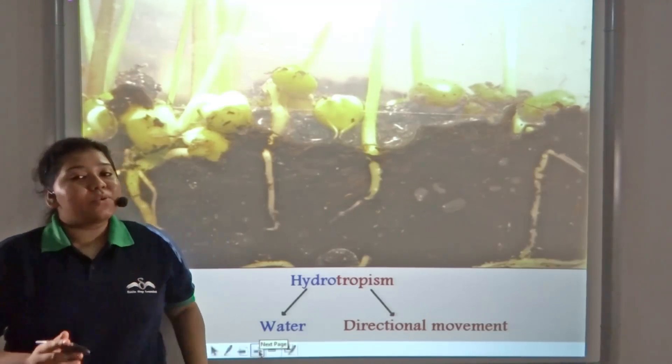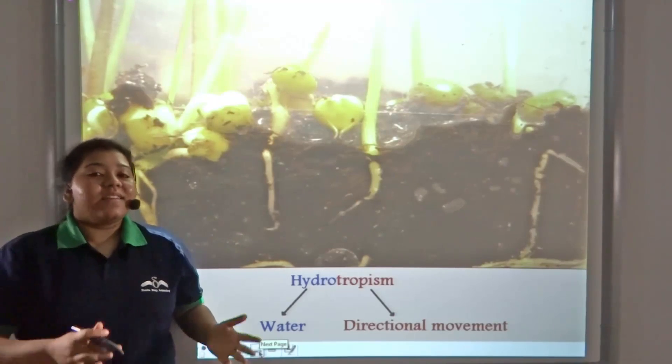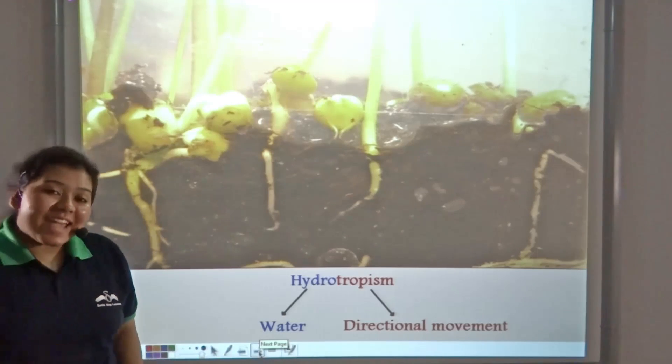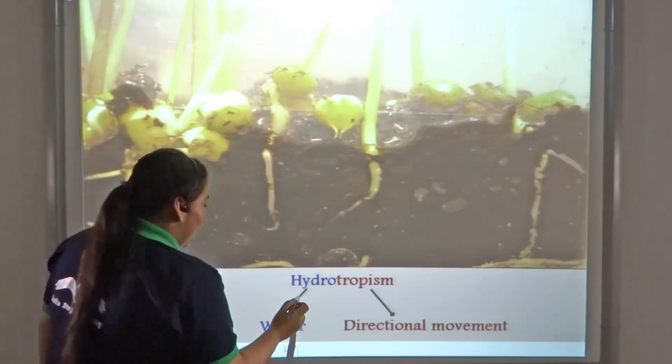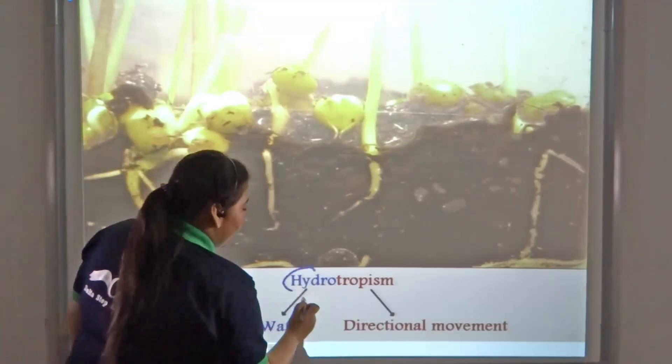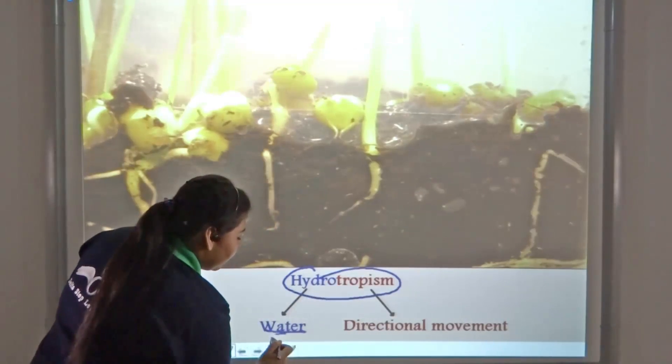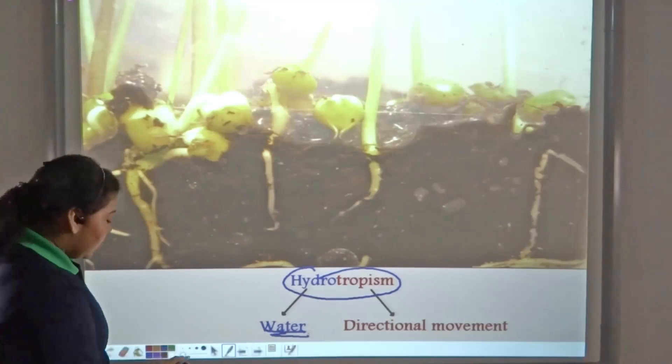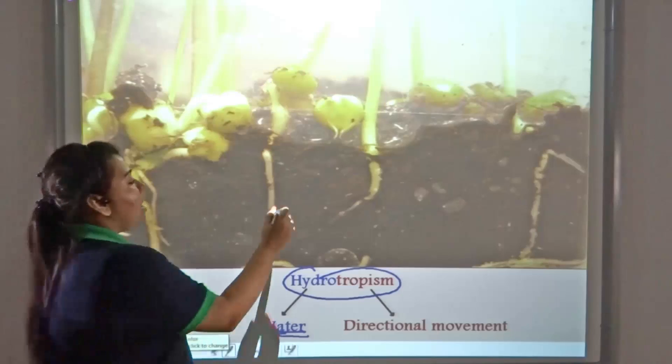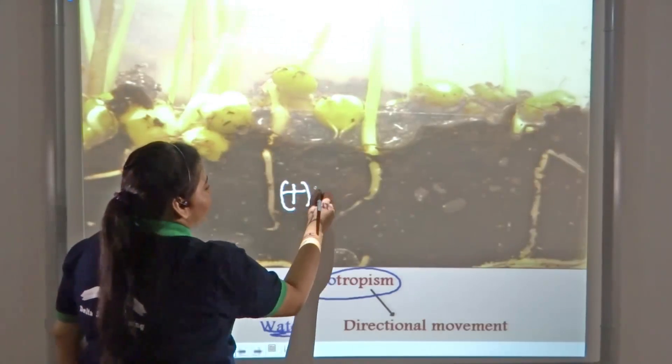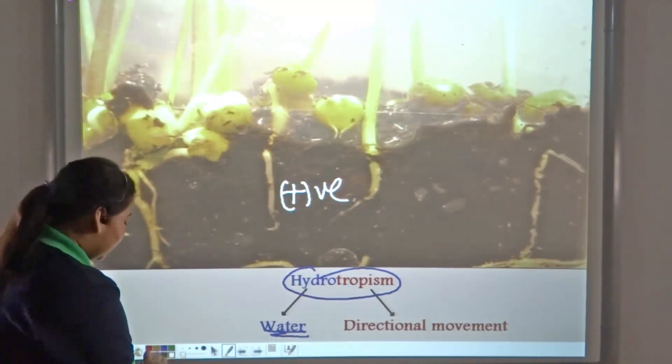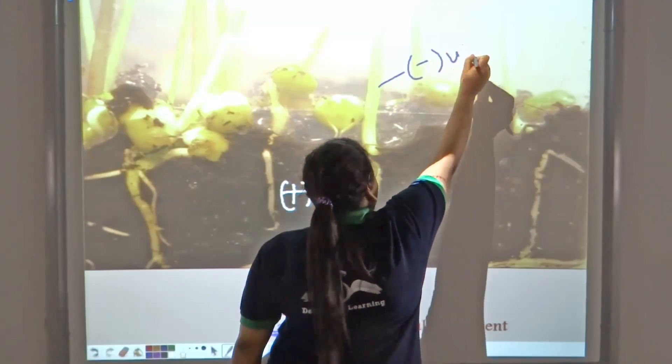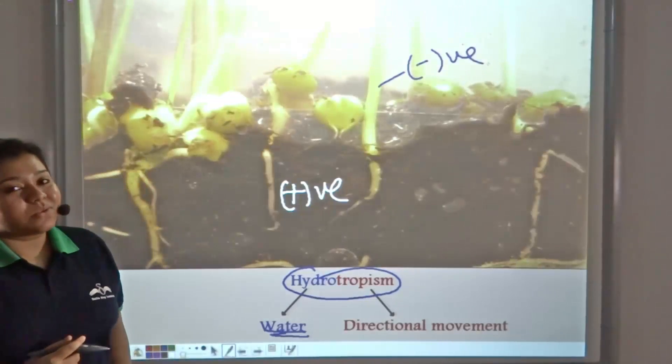Just like roots are positively geotropic, they grow towards the water source as well. This type of directional movement is known as hydrotropism, where hydro means water and tropism means directional movement. Roots are positively hydrotropic, whereas shoots are negatively hydrotropic.